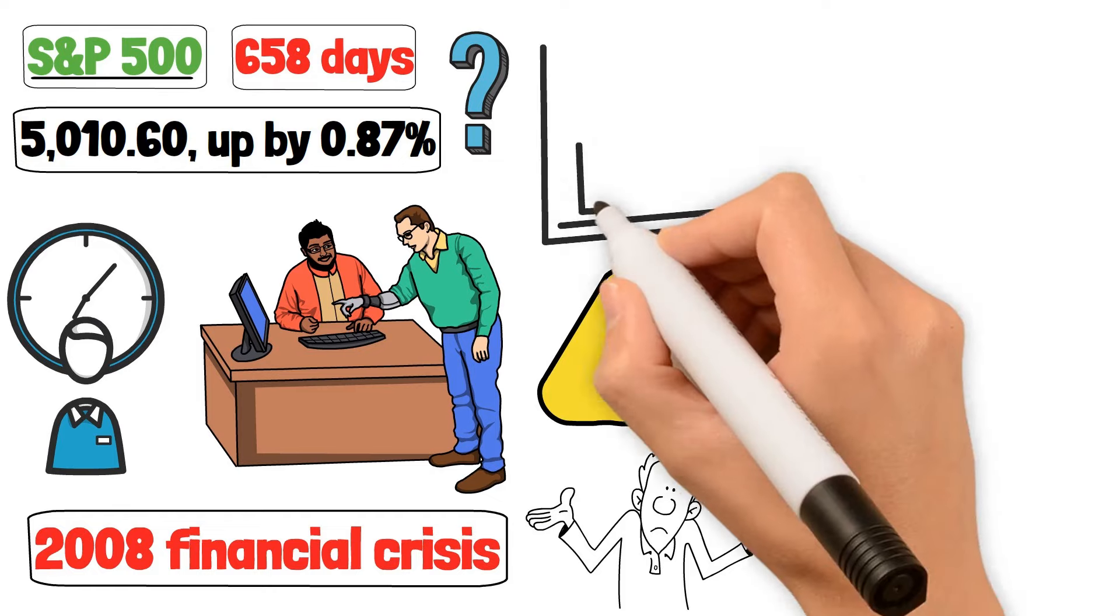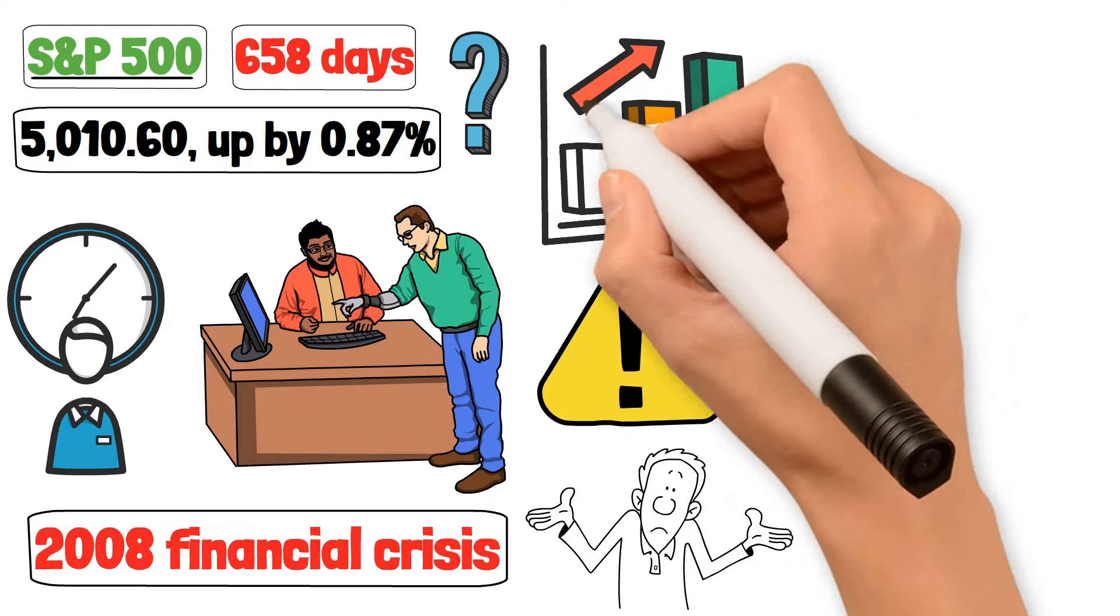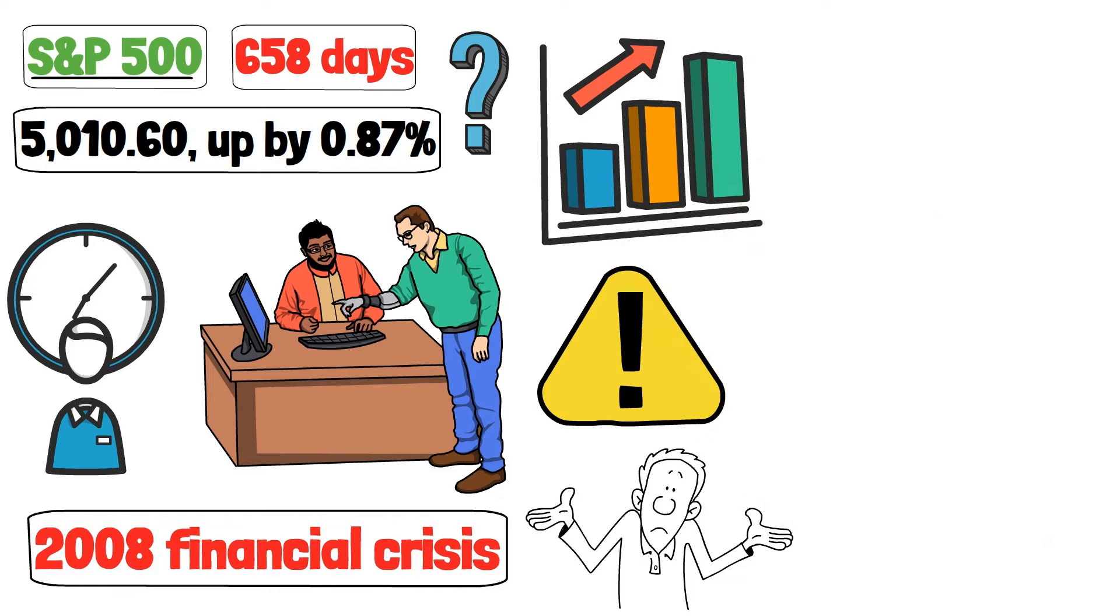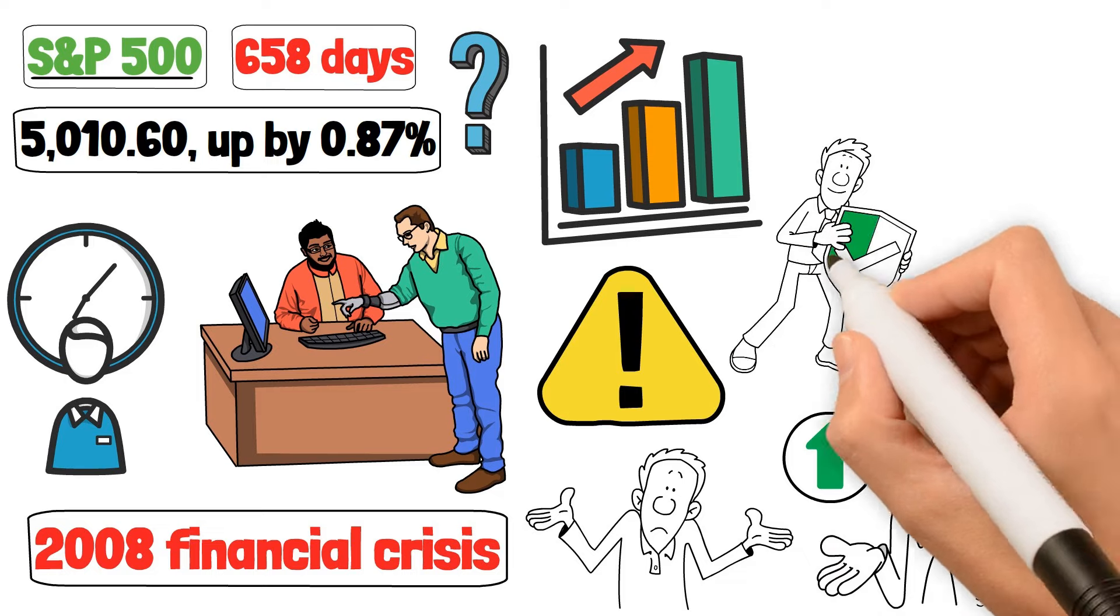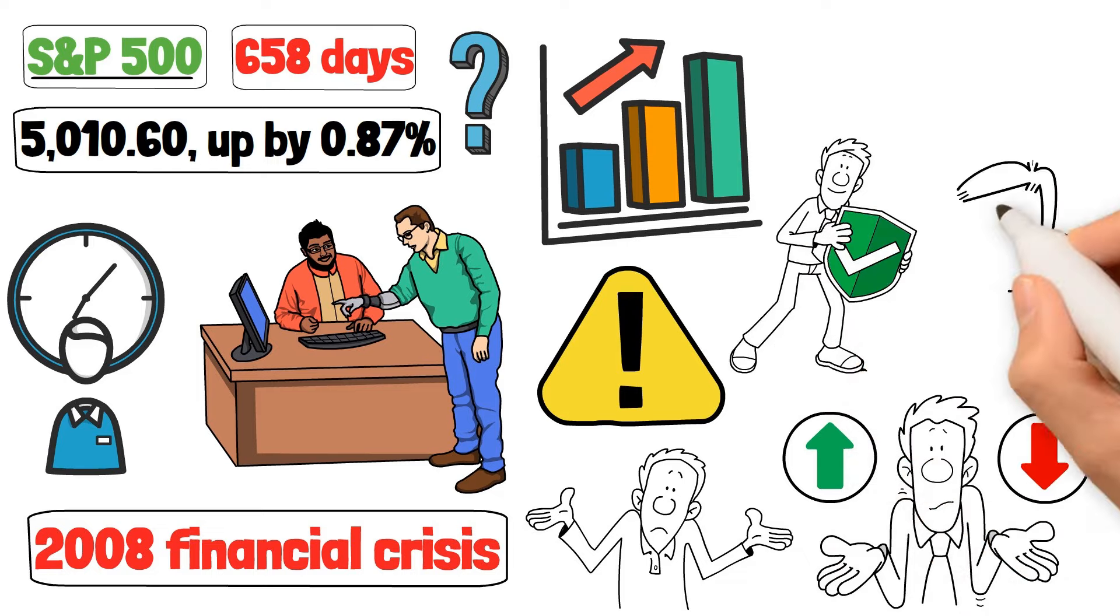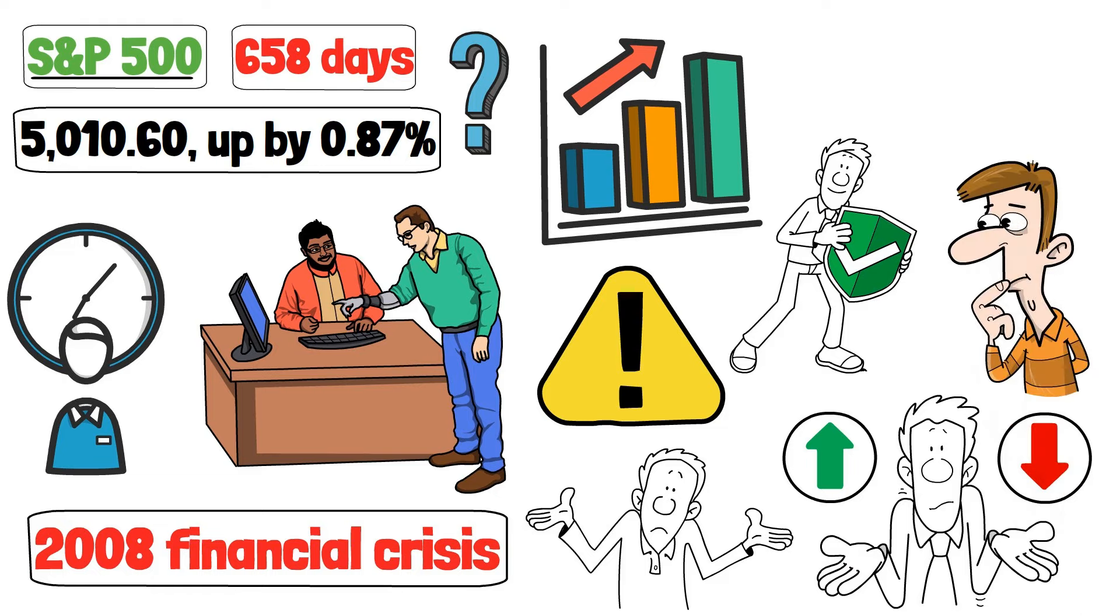The S&P 500 is climbing, but the yield curve is telling a different story. It's a classic case of what goes up must come down. Perhaps it's time to strategize. It might also be wise to secure profits and rebalance towards more defensive assets. Diversify to mitigate potential risks.